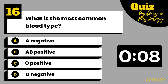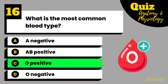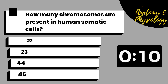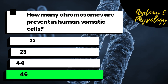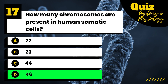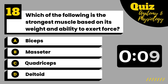What is the most common blood type? How many chromosomes are present in human somatic cells? Which part of the body is the strongest muscle based on its weight and ability to exert force?